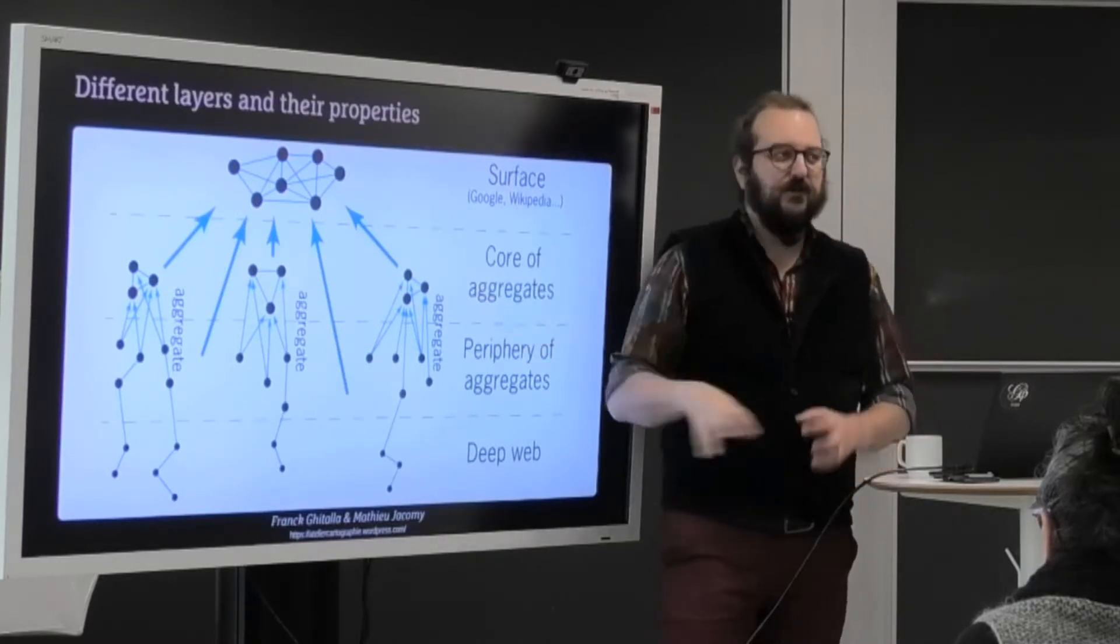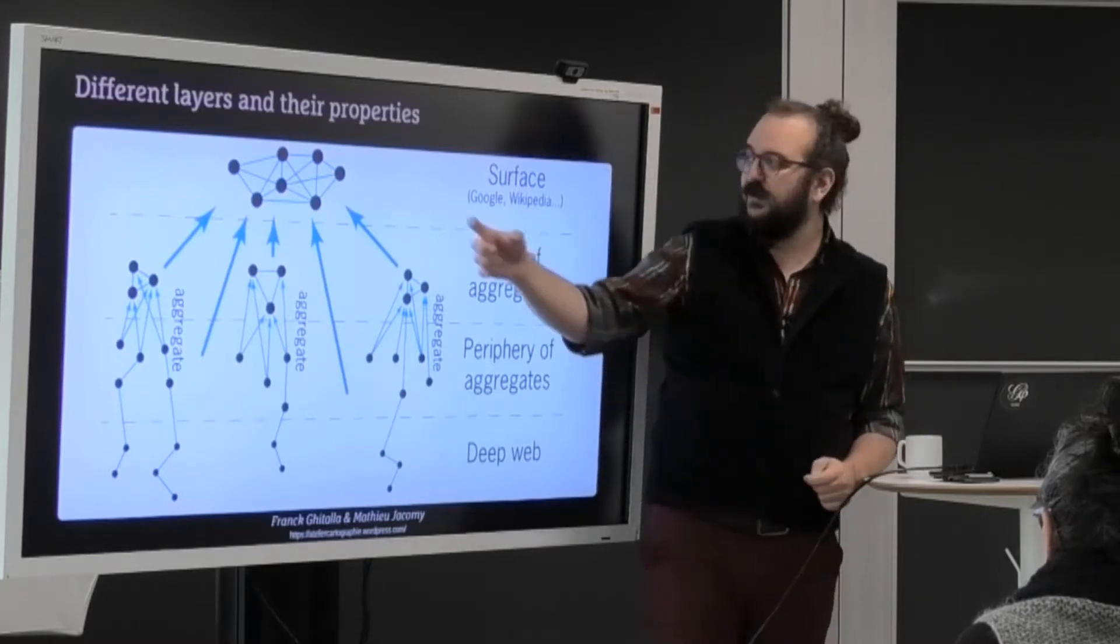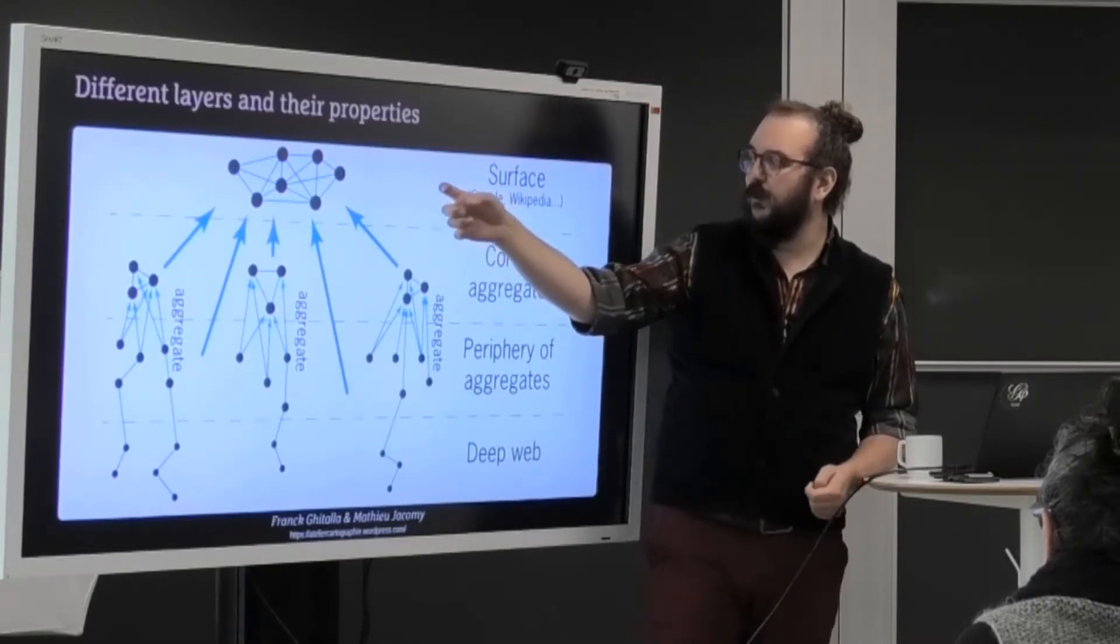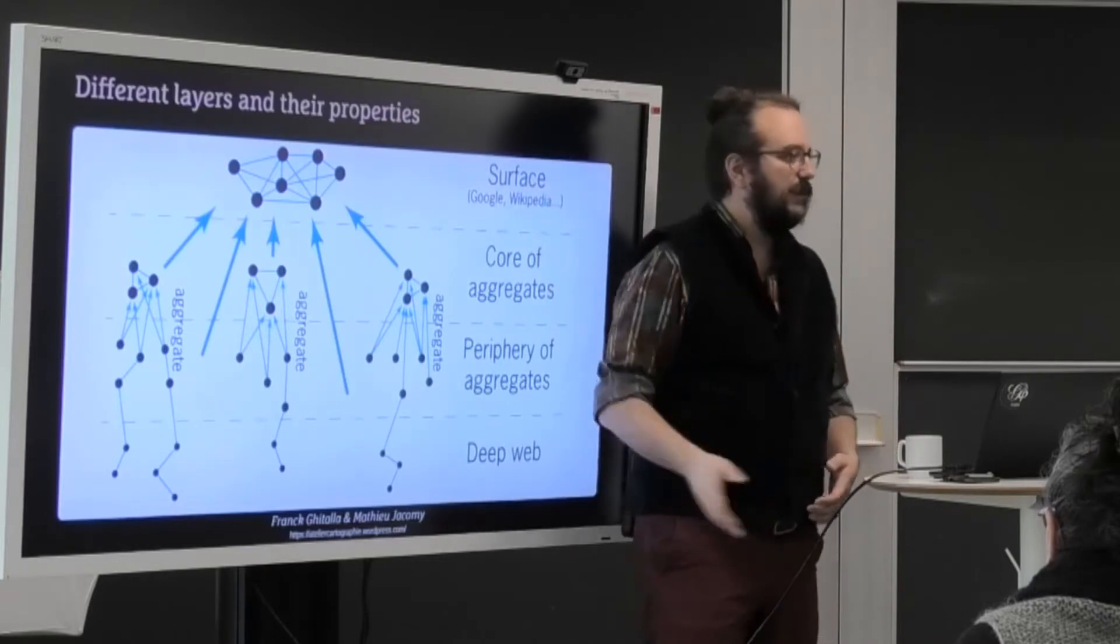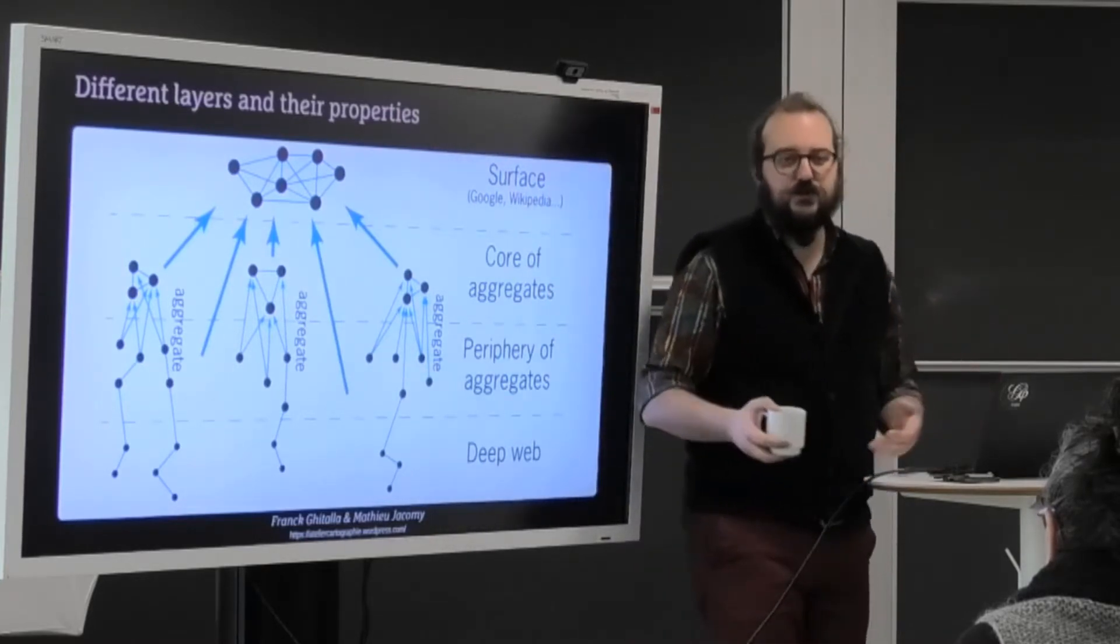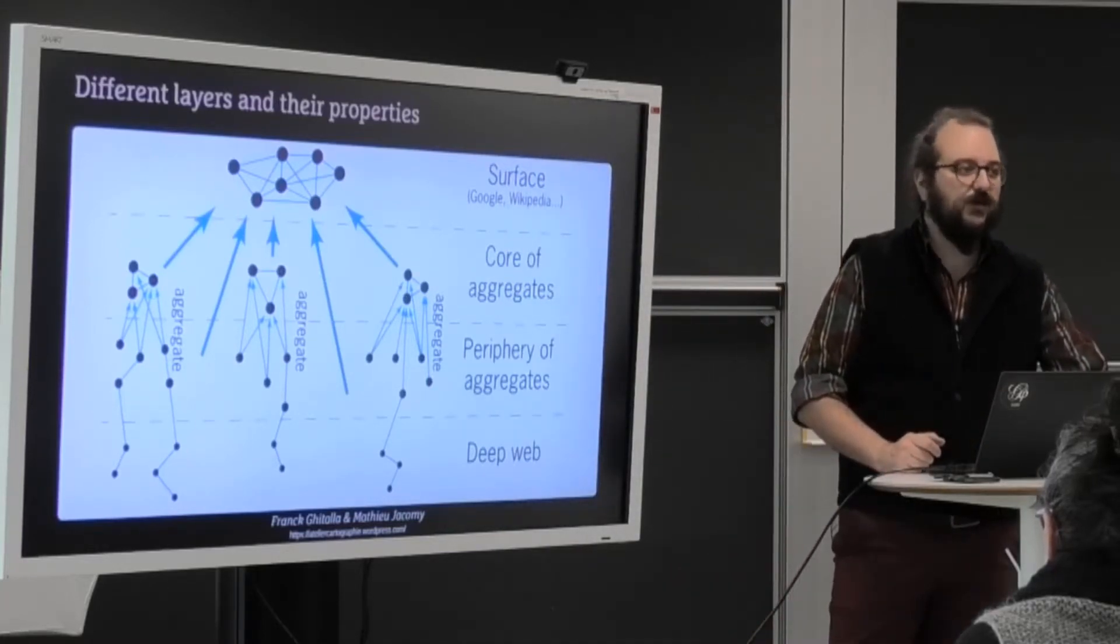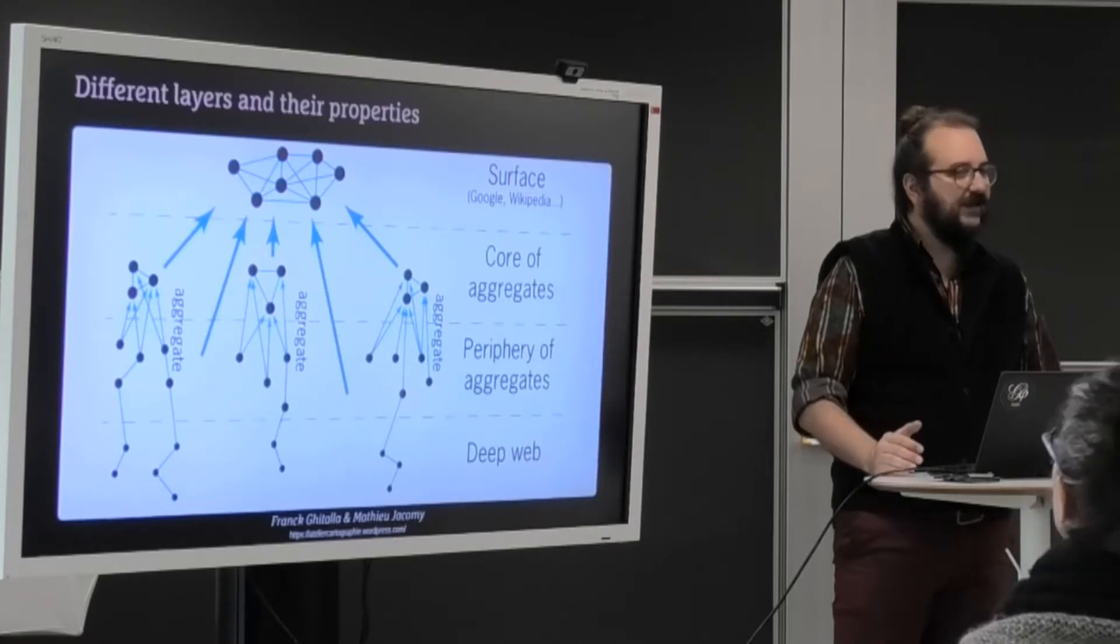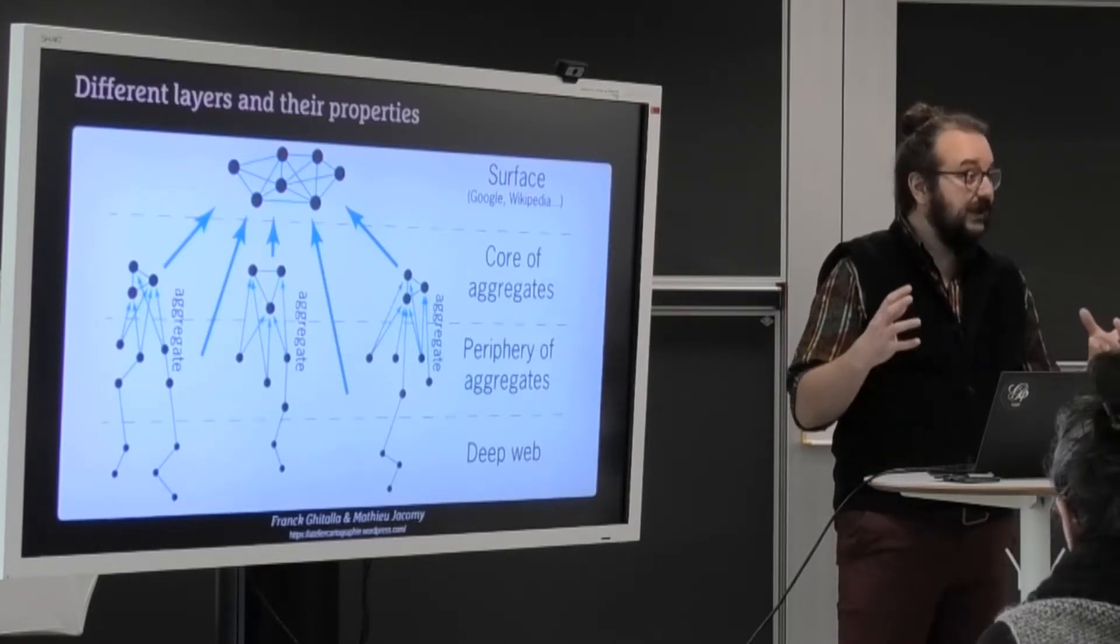But the web is not just done of these packets. It also has a huge center, which is the surface of the web, where you have the most known websites like Wikipedia, Google, universities, national institutions, famous influencers on Instagram or whatever. It's not many websites, but they are hugely linked.